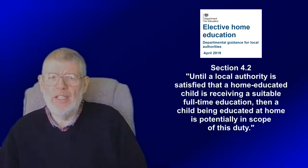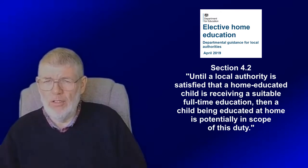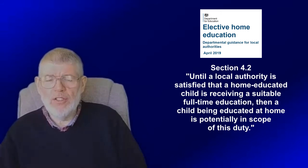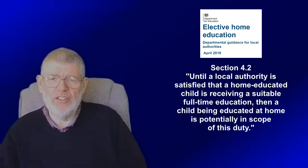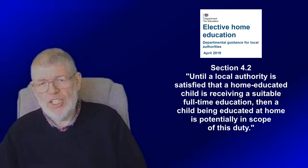That has been turned on its head by section 4.2 of the guidance for local authorities, which at one point reads until a local authority is satisfied that a home-educated child is receiving a suitable full-time education, then a child being educated at home is potentially in scope of this duty. British law is famously based on the principle that citizens are innocent until proven guilty. This clause has inverted the basis of educational law by making clear that a local authority should act as if home-educating parents are guilty of failing to provide their children with a suitable education until they have proved themselves innocent to a local authority officer who may or may not be biased against home-education.